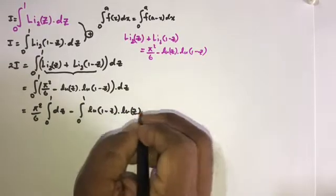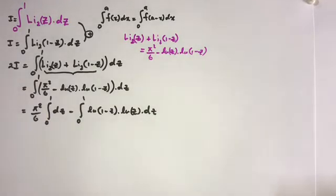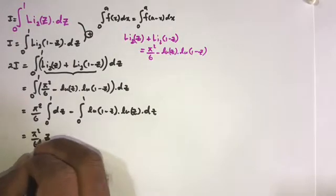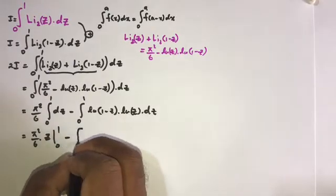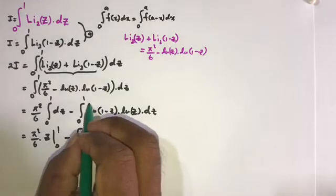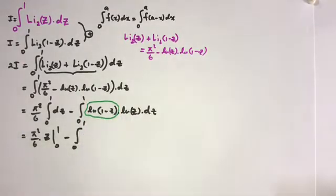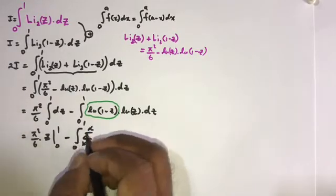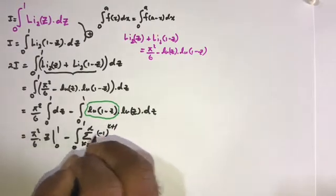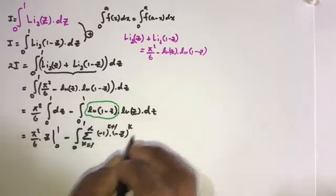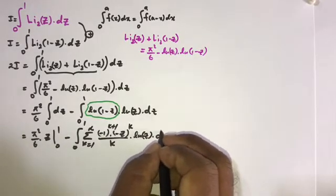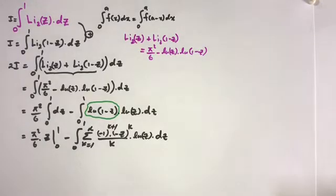We know π²/6 times [c] from 0 to 1, minus the integral from 0 to 1. Instead of ln(1 minus c), we use an infinite series: the sum from k equals 1 to infinity of (minus 1)^(k+1) times c^k over k, and here we have ln(c) dc.